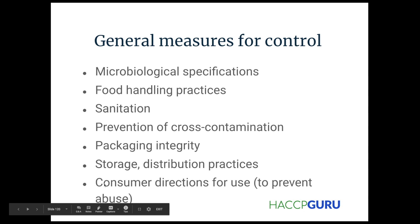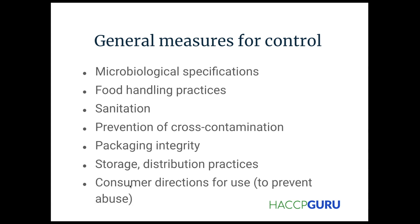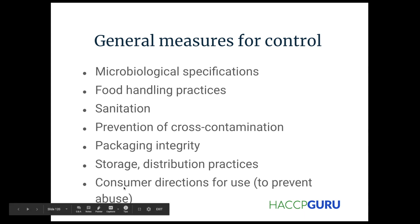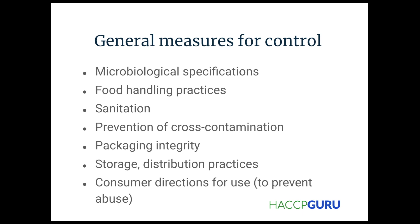We can do all we can in the facility, but if the consumer doesn't use the product the way it's intended and instructed, they're still at risk for a food safety event. That's why we stress the importance of what the package says being correct. If the package doesn't have the right instructions, ingredient deck — especially when it comes to allergens — everything on that package needs to be correct. That's part of the HACCP plan: making sure new packages have been checked and double-checked and triple-checked before we put it on the production line and hit that green button.